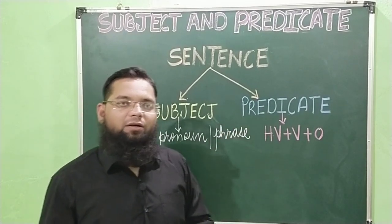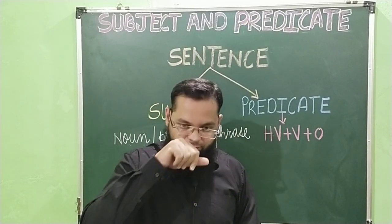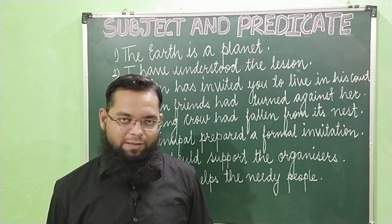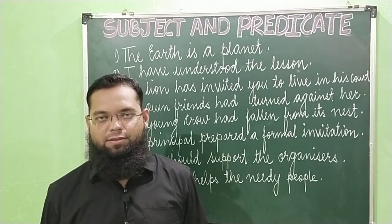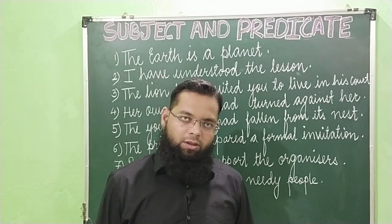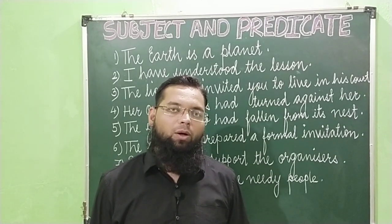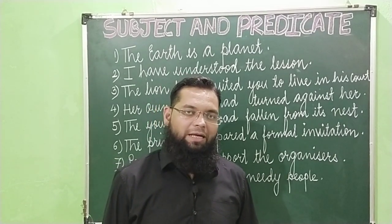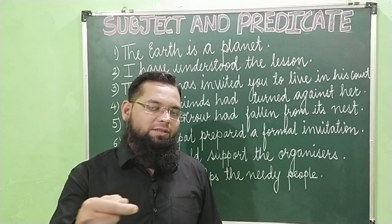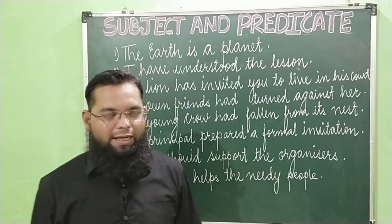Now we are going to deal with examples of how to identify the subject and predicate in the given sentences. As I told you, predicate will begin with the helping verb. In the case when the helping verb is not given in the sentence, the predicate will begin with the verb. Let's have a few examples.